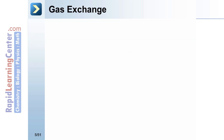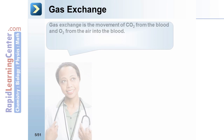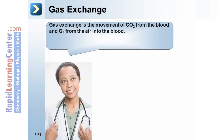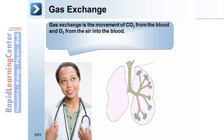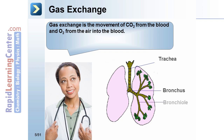Gas exchange is the movement of CO2 from the blood and O2 from the air into the blood. Gas exchange occurs in the lungs, and specifically within the alveoli.